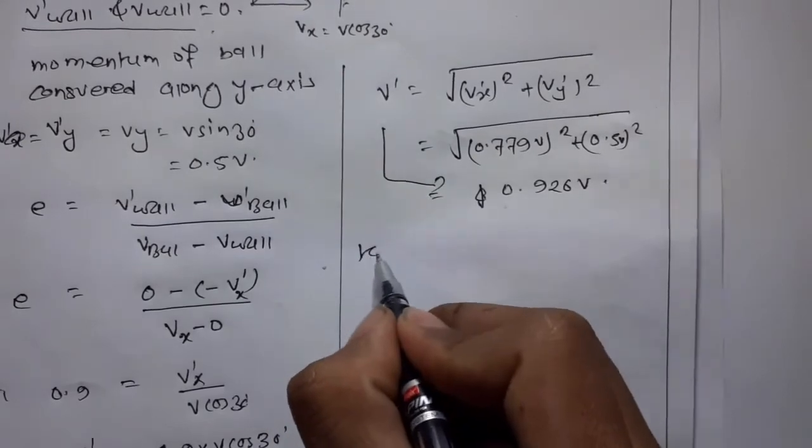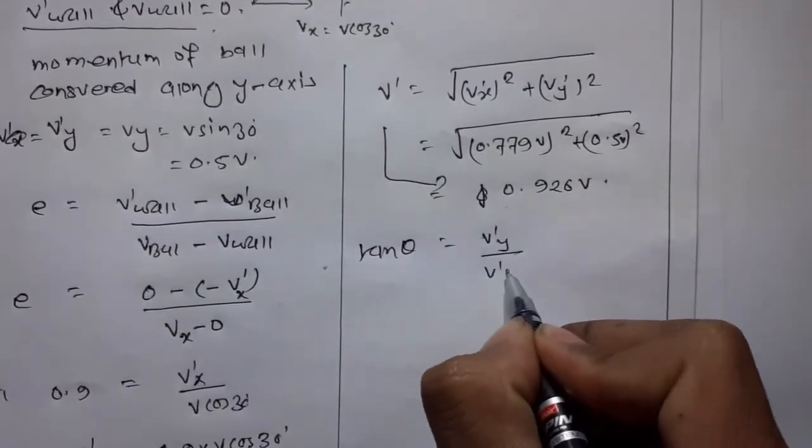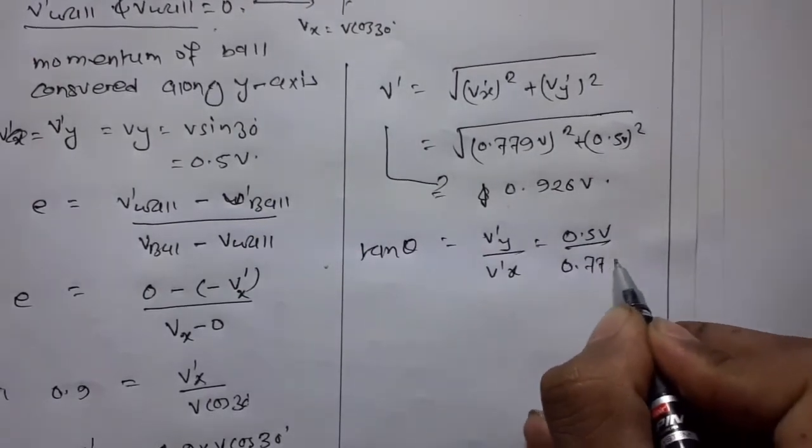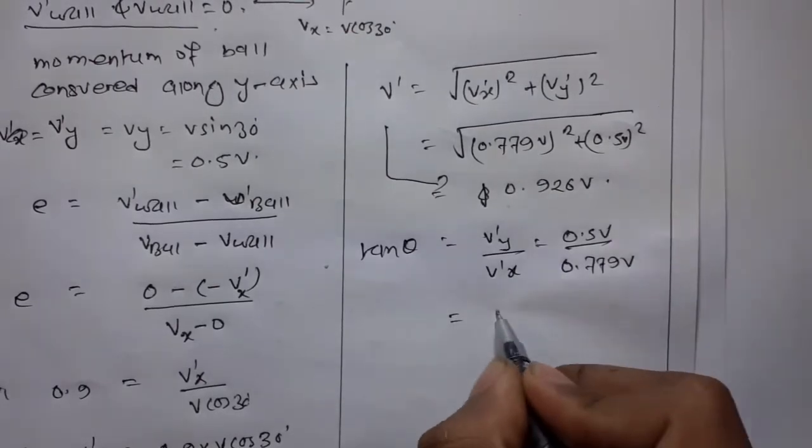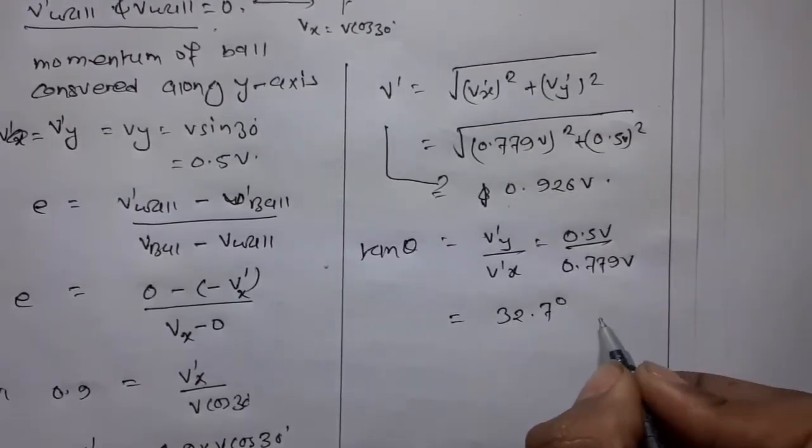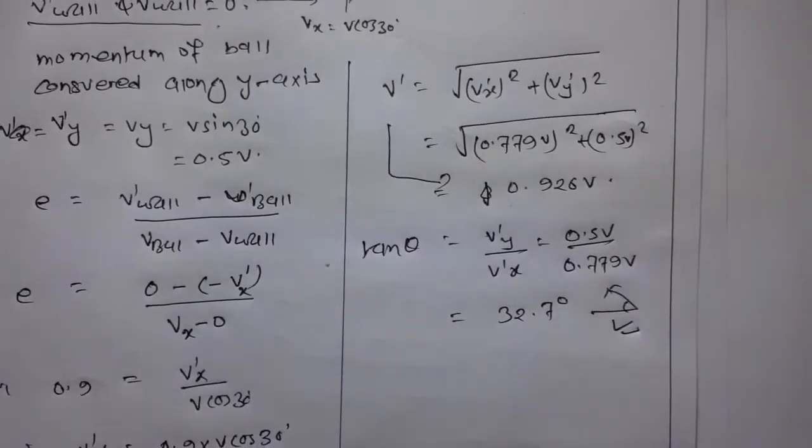For the direction, tan(θ) = v'_y/v'_x = 0.5v/0.779v, giving θ = 32.7°. This is the required answer.